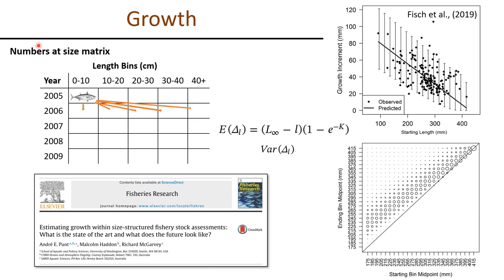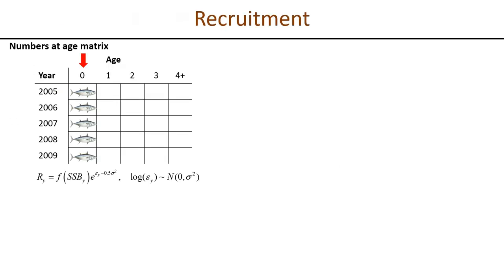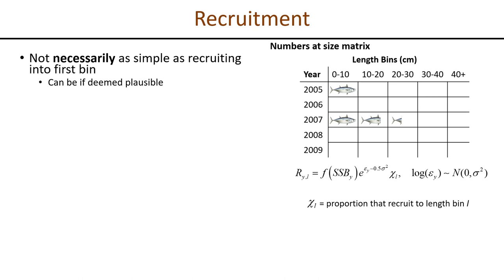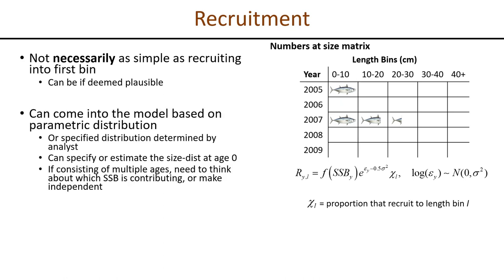The next major difference is how recruitment is governed. In an age-structured assessment, it's quite simple — all recruits enter the population in the first age bin, often age zero. In a size-structured model it's more complicated. It certainly can recruit into the first bin if deemed plausible, but you can also estimate parameters of a parametric distribution defining how recruits are allocated into size bins each year, or specify or estimate the size distribution at age zero.